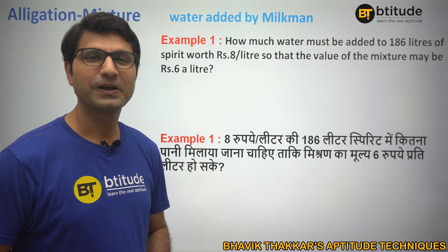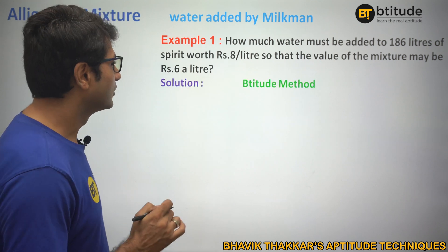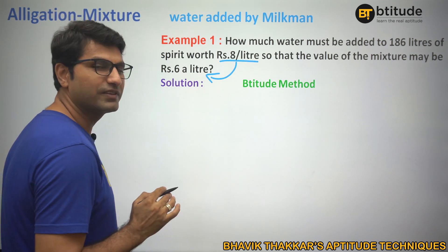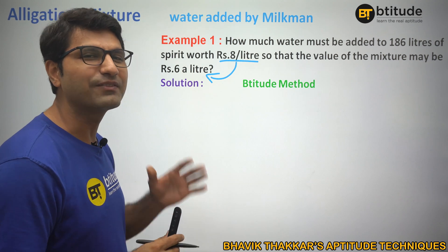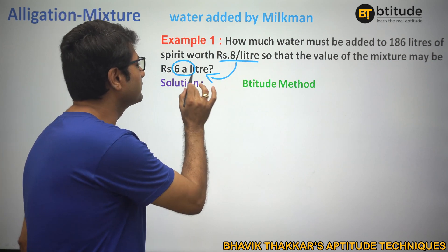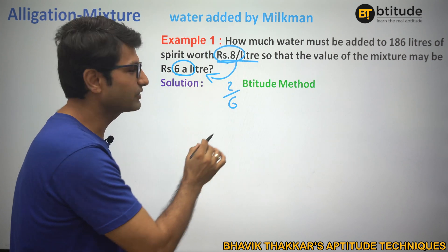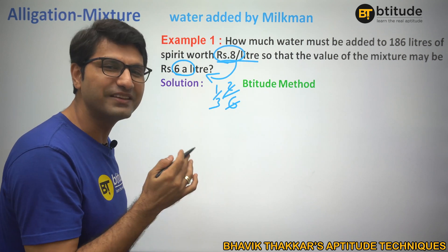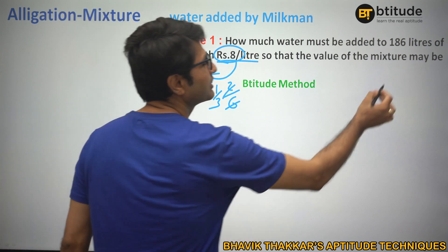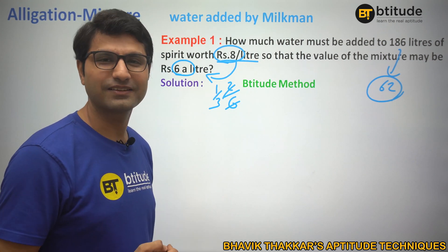Let's move to the questions. You can pause the video and try it on your own first. The cost is rupees 8 per litre, but you want to change it to rupees 6 per litre by adding some water — so how much profit are you making? Your cost becomes 6 and you sell at 8, so profit is 2 on cost of 6, which is one-third. To make one-third profit, one-third water has to be added — one-third of 62 is the answer in litres.